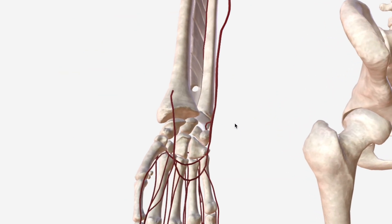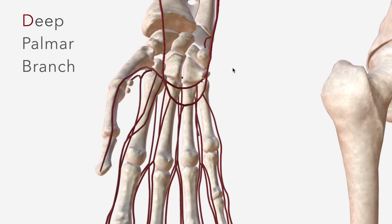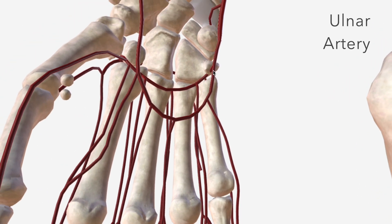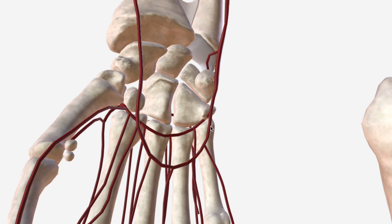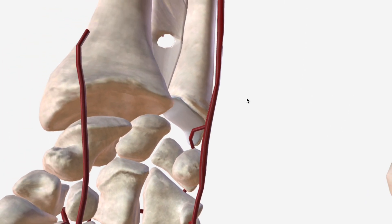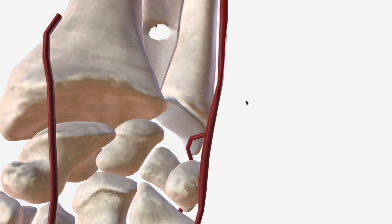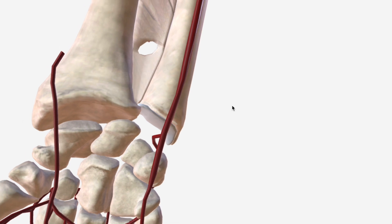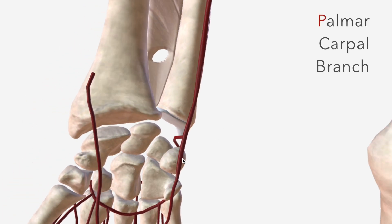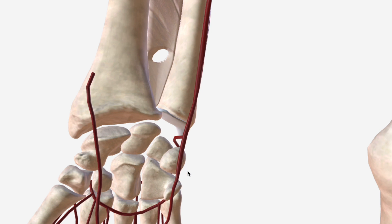Next, the deep palmar branch of the ulnar artery. We can consider the termination of the ulnar artery as the superficial palmar arch. But before we get to that, we should discuss the last of our mnemonic branches — the palmar carpal branch, which is not represented in this model but courses across the carpal bones and anastomoses with its partner from the radial artery.